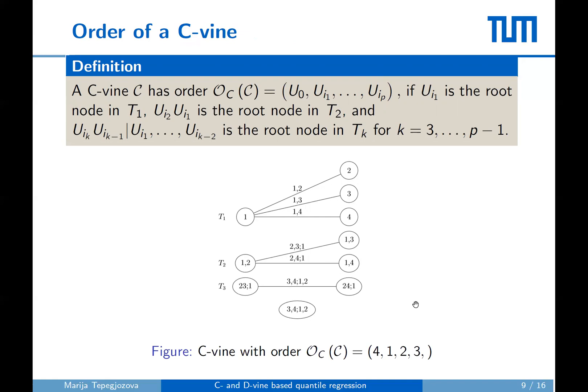To see how we determine the order of a C-vine, we consider this four-dimensional example. We start from the second element of the order. It is the root node of the first tree, that is one in this example. The third element is the remaining variable of the root node in the second tree, which is two. Similarly, the fourth element is the remaining variable in the root node of the third tree, which is three. Finally, the last remaining variable four in our example is put as the first element of the order.